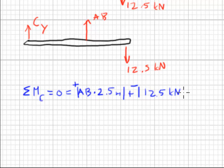Let me add to that the moment of the 12.5 kilonewton force. We need to multiply the 12.5 kilonewton times 4 meters, which is the distance from D all the way to point C. And now we can solve for force AB. AB ends up being positive, 20 kilonewtons.